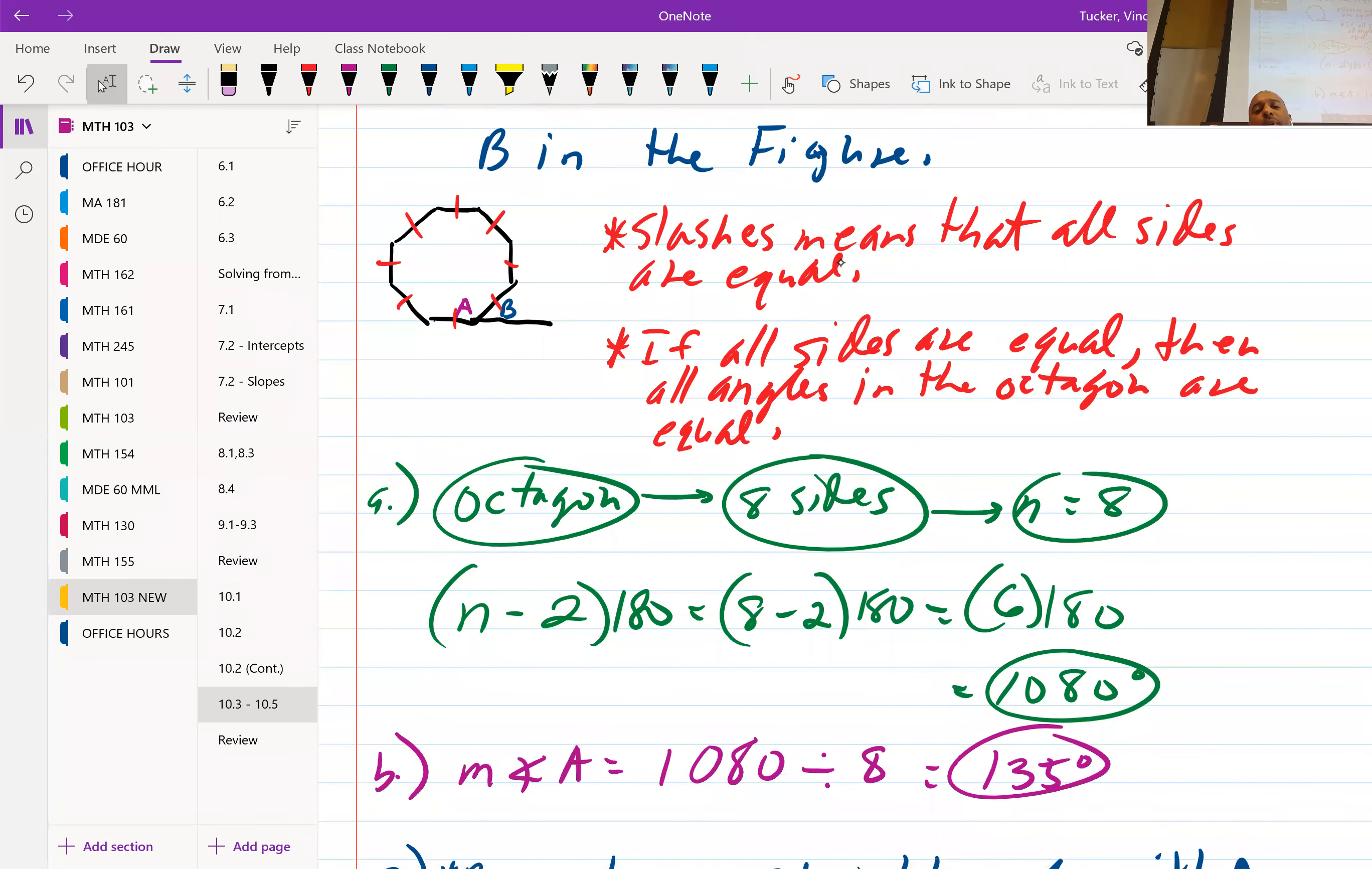All right, so B tells us to find a measure of angle A. A is one of the angles inside of the octagon. And if we know that all of the angles in the octagon are equal, I can take that 1080 divided by eight, and see that my answer is 135 for each one of the angles in the octagon, including angle A. So 135 is our answer.